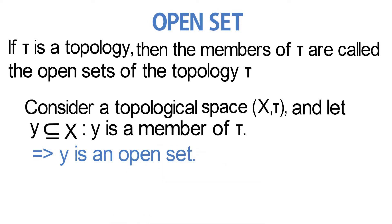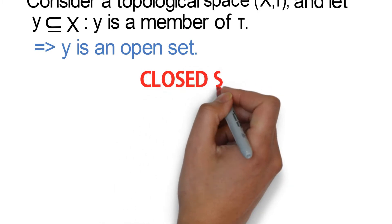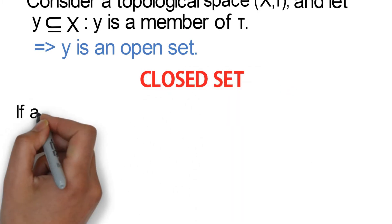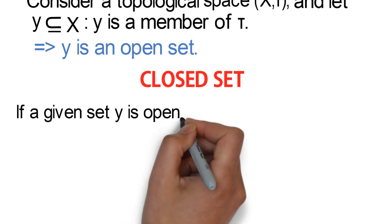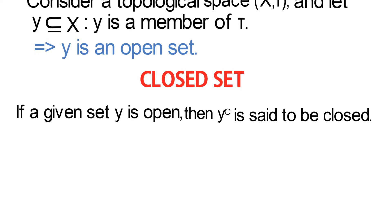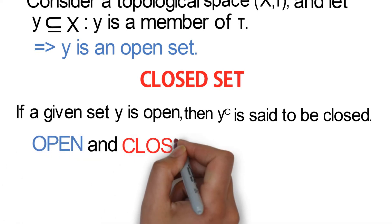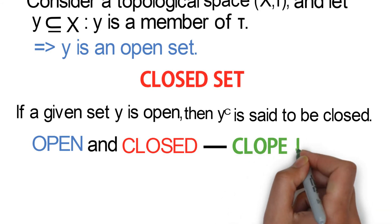Now we know what an open set is. So we take the closed set. If a given set y is open, then y complement is said to be closed. Note that if a set is open and closed at the same time, it is called a clopen set.